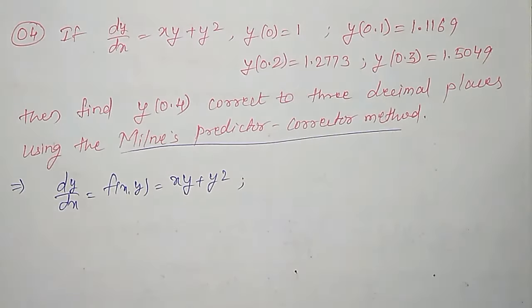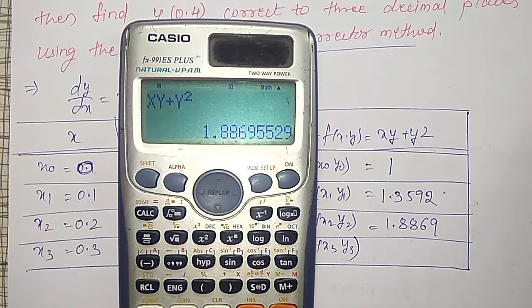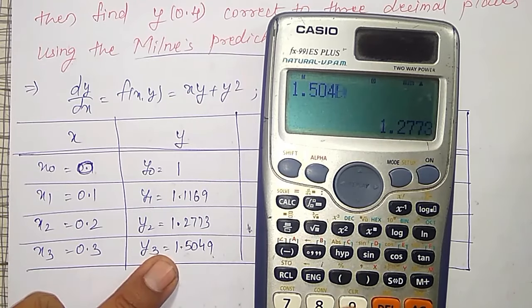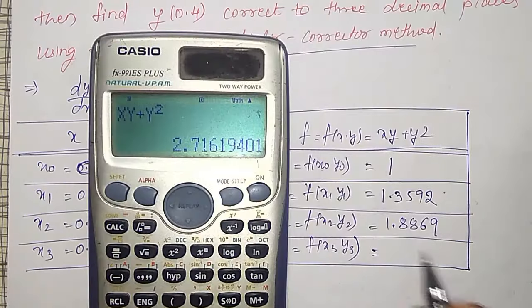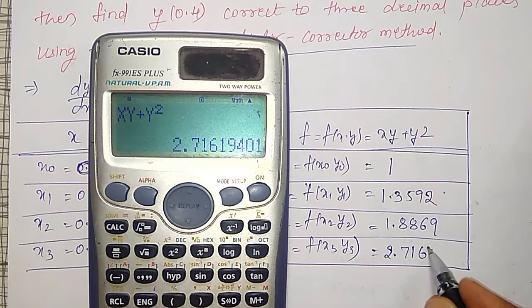Like that, equal to, again x will ask: 0.2, and y value is 1.2773, equal to, it is 1.8869. Next, equal to, again it will ask for x: 0.3, and y value is 1.5049. And its value comes out to be 2.7162.